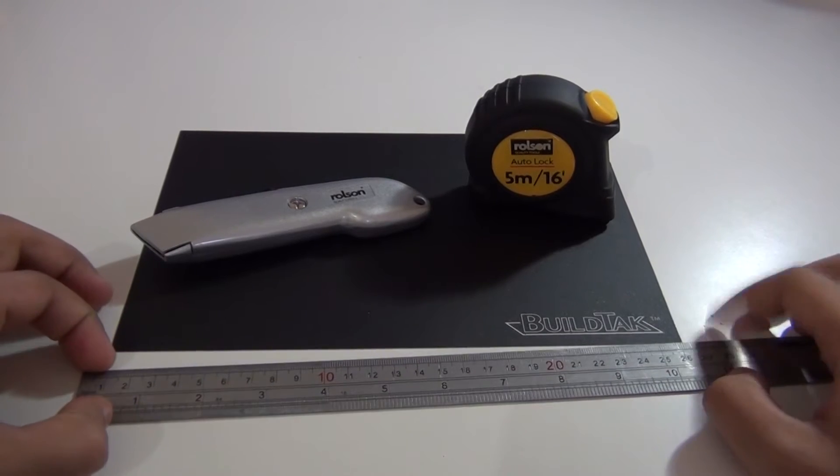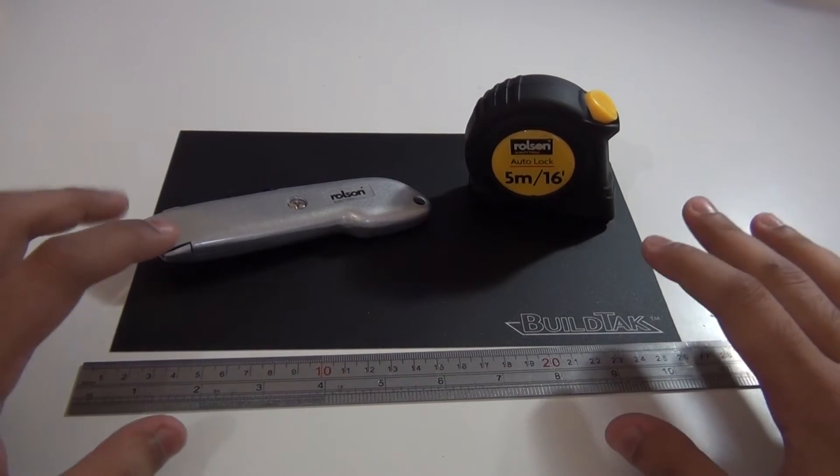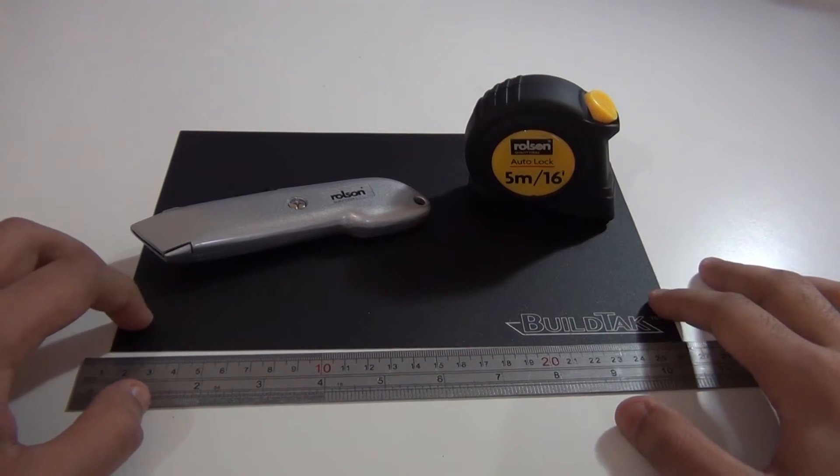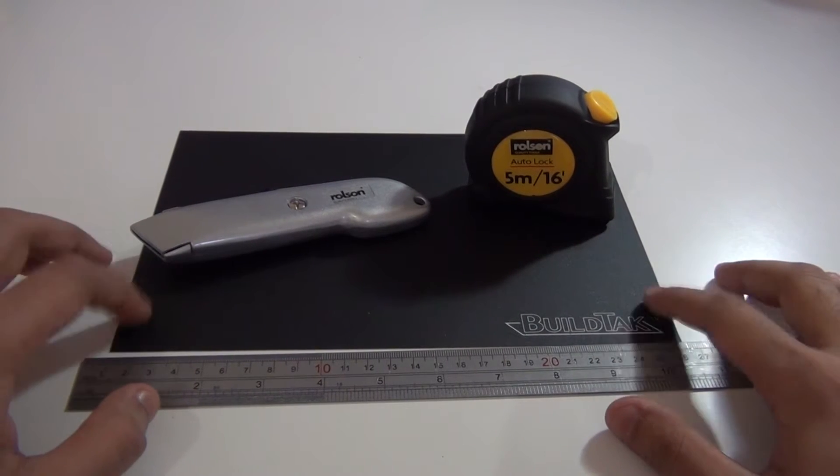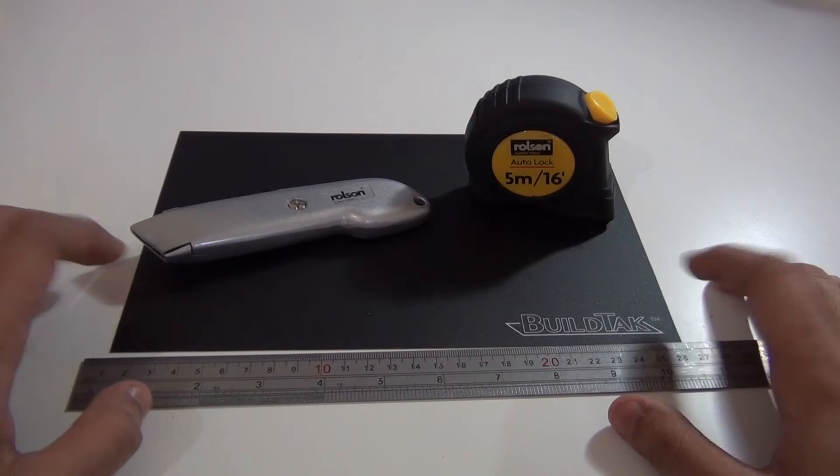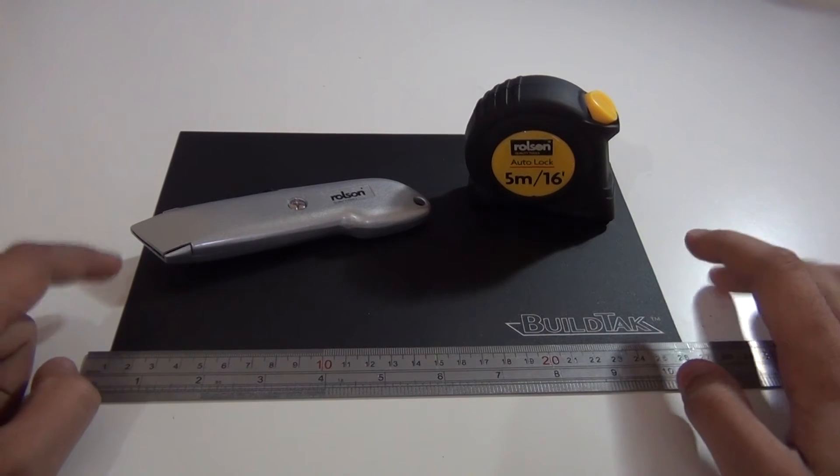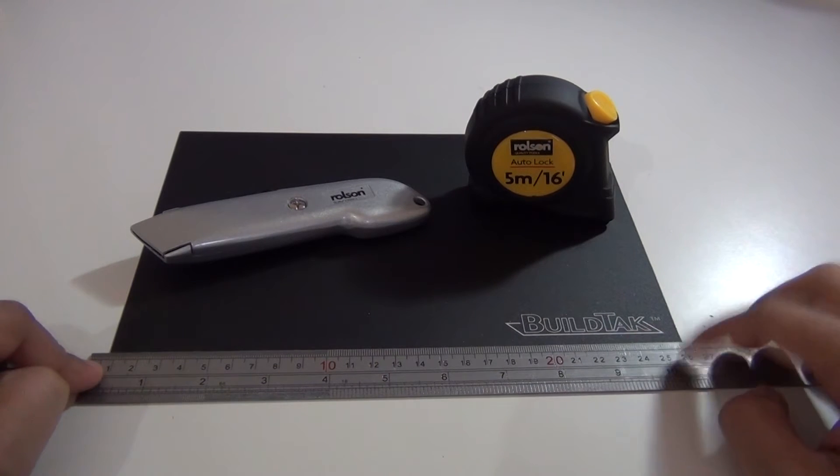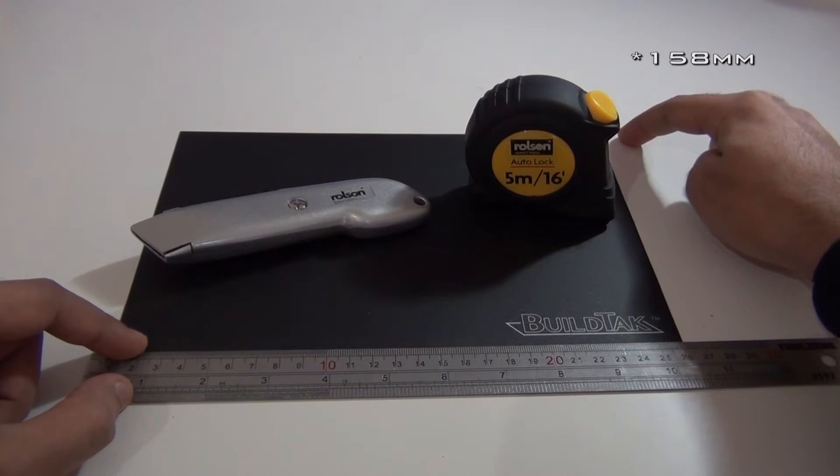So basically what can tend to happen is that these out-of-the-box might not be the right size for your 3D printer, and as is the case with the Flashforge Dreamer, they don't do a size exactly to the Flashforge Dreamer build plate. So what you need to do is you need to cut them down to size. Now with the Flashforge Dreamer you need to cut it down to 135 millimeters that way and 168 millimeters that way.